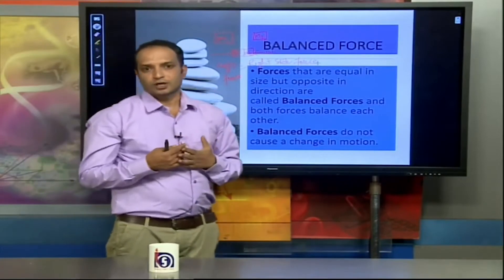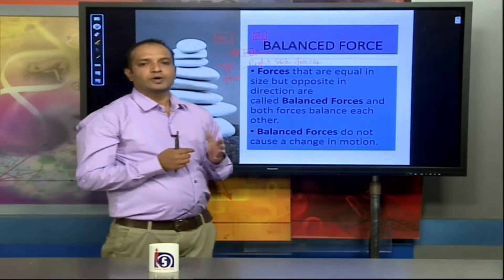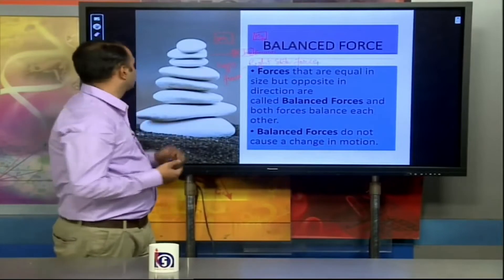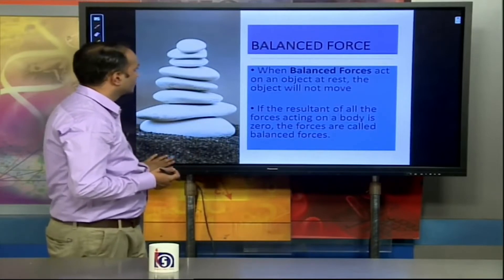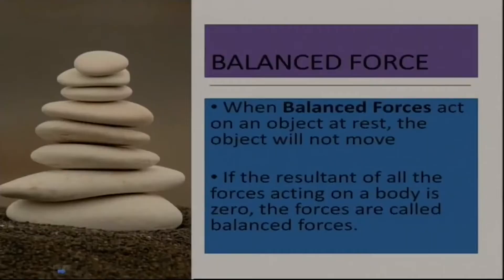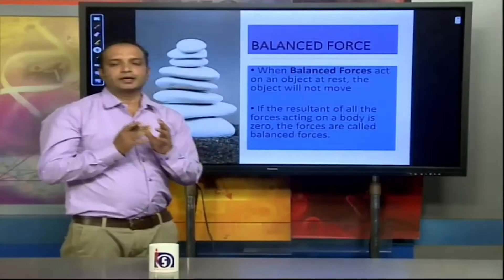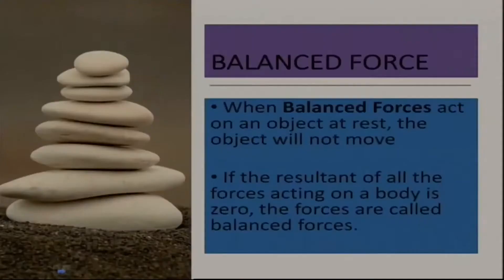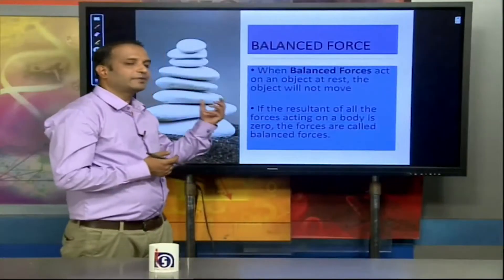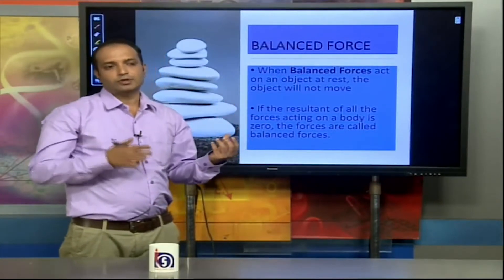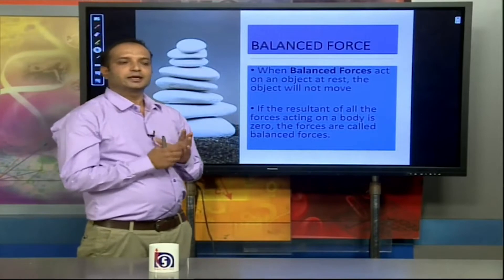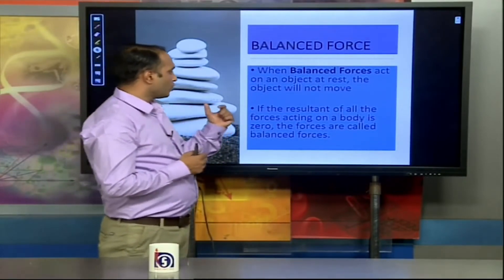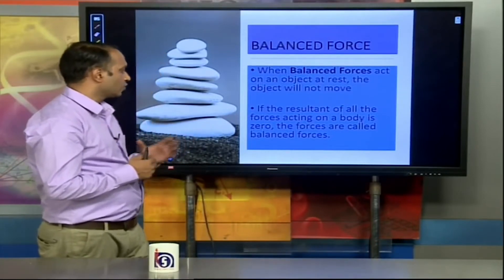Since the net force is 0, there is no change in the position of any object. When balanced force acts on an object at rest, the object will not move. The resultant force is 0 since the left-hand side force equals the right-hand side force — both have the same magnitude. If the resultant of all forces acting on a body is 0, the forces are called balanced forces.